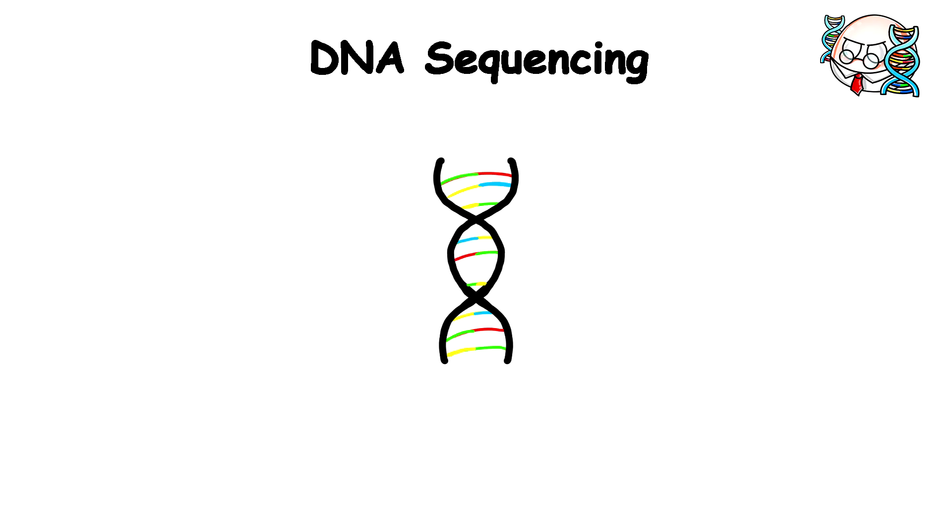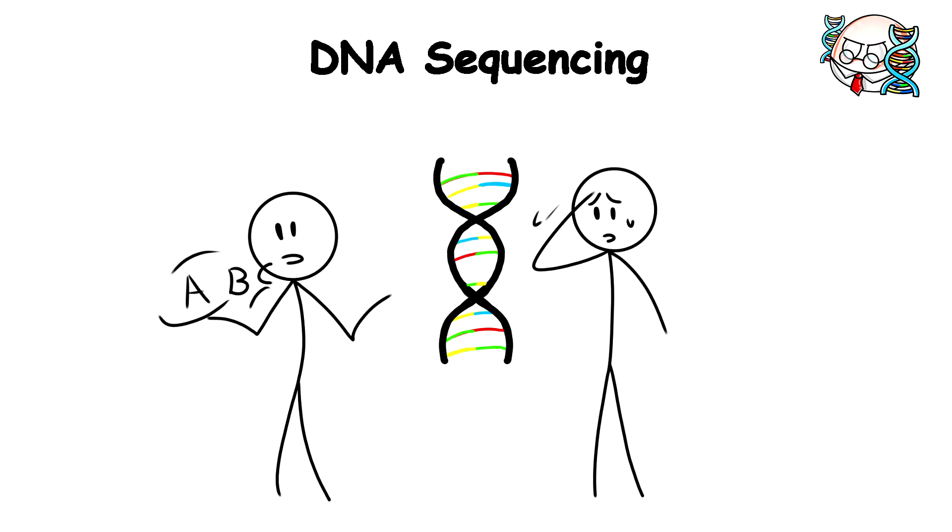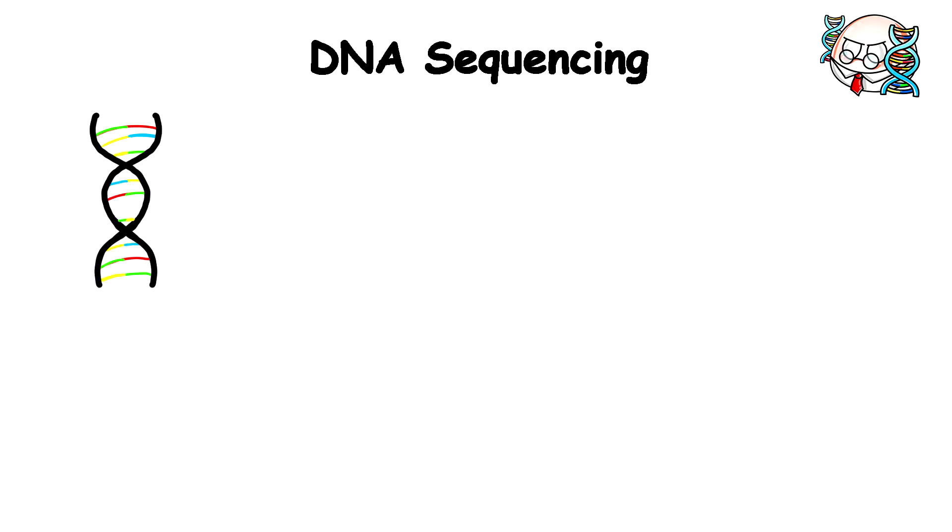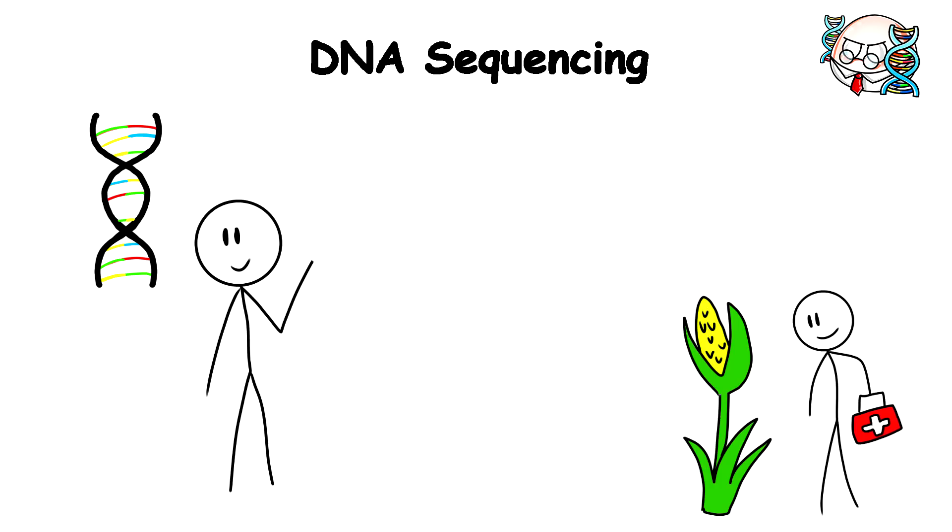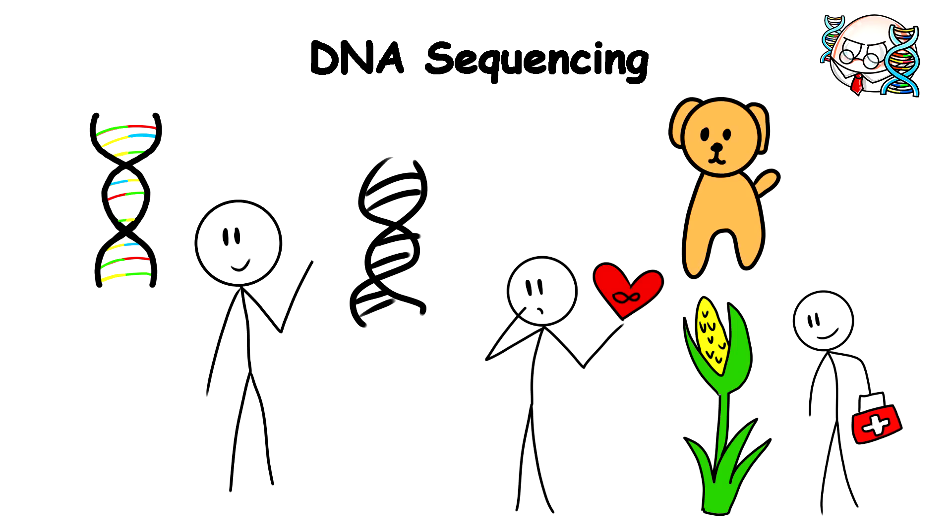At first, reading DNA sequences was extremely difficult. It took years of hard work to spell out even tiny sections. DNA sequencing could make anything possible, including cancer cures, better crops, and even the secret to immortality. We could find these things hidden away by comparing our DNA with that of other animals.